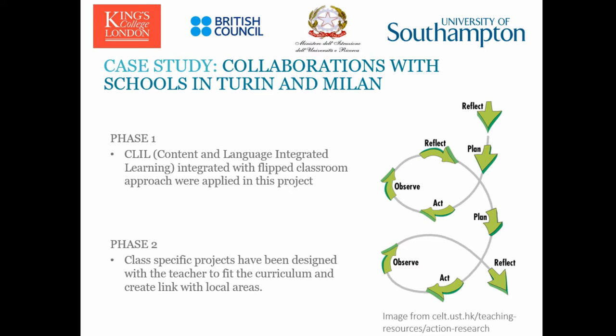The second phase related to an Italian government reform called 'the good school.' As part of these changes, students between 16 and 18 years old need to take a placement — a work experience. In that case, students used the materials to explore and develop skills, including learning about 3D modelling, and to engage with their own cultural heritage. It wasn't just about comparing the Roman world to now, but about looking at Roman buildings in your own city and exploring it in a different way.